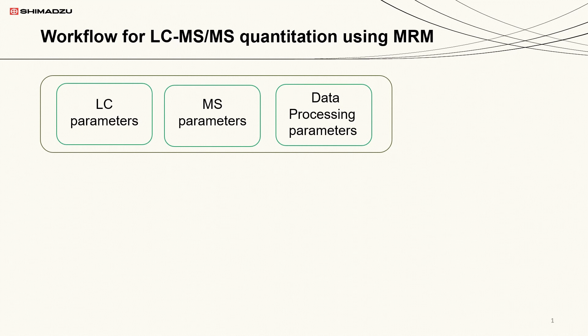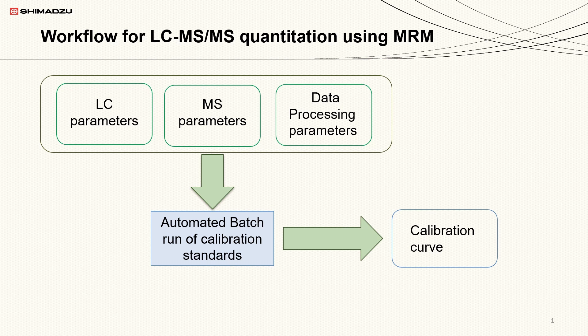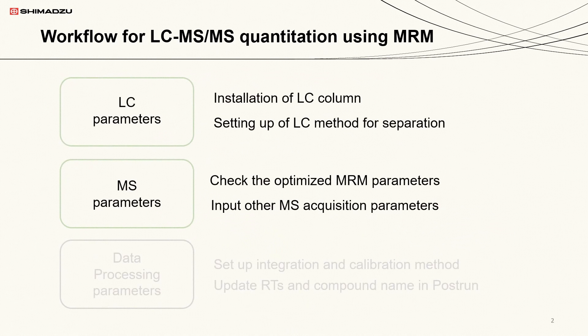The next step is to set up the LC-MS-MS quantitation method based on the optimized MRM method to build a calibration curve. Three key components — LC parameters, MS parameters, and data processing parameters — will be set up for the LC-MS-MS quantitation method. Using this method, an automated batch run will be conducted to build calibration curves for standards.